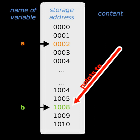The actual format and content of a pointer variable is dependent on the underlying computer architecture. Using pointers significantly improves performance for repetitive operations like traversing iterable data structures, e.g. strings, lookup tables, control tables and tree structures.